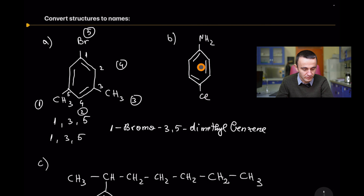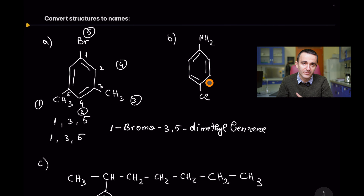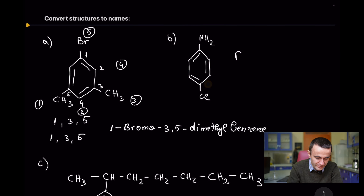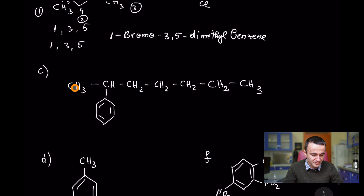Compound B: without the chlorine this ring would be called aniline — the common name for an aminobenzene. It has two substituents, so you can use ortho, meta, or para. In this case the chlorine is at the para position, so the name is para-chloroaniline.